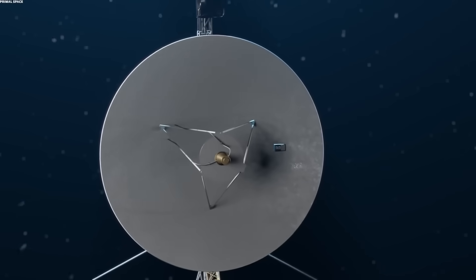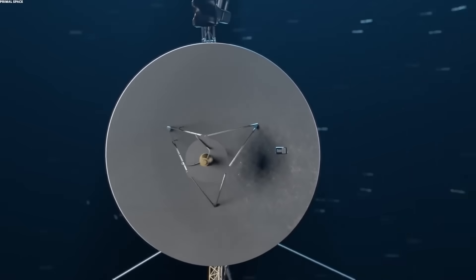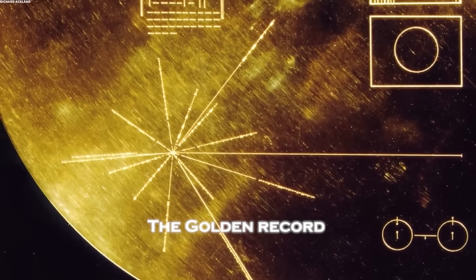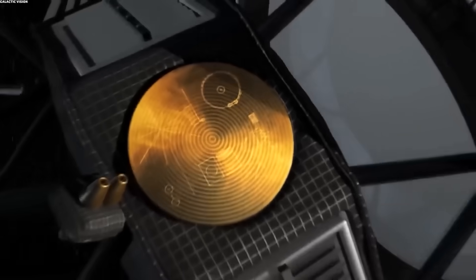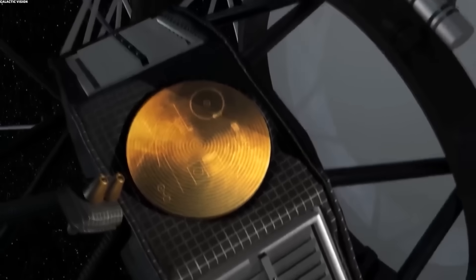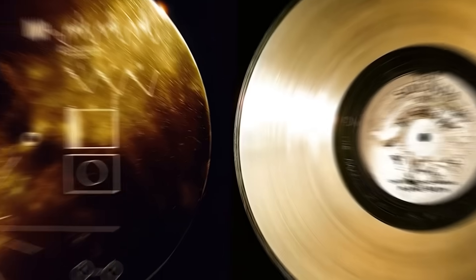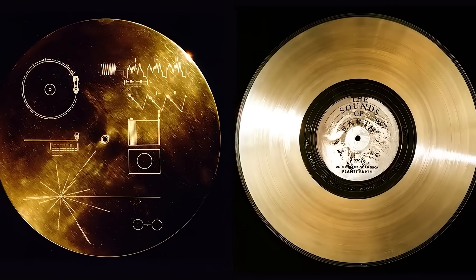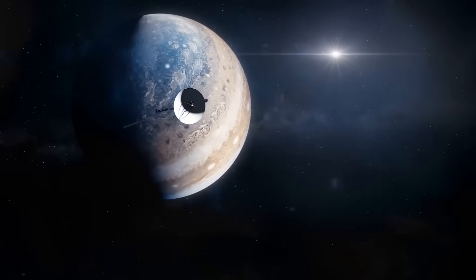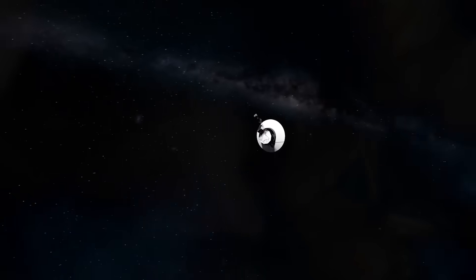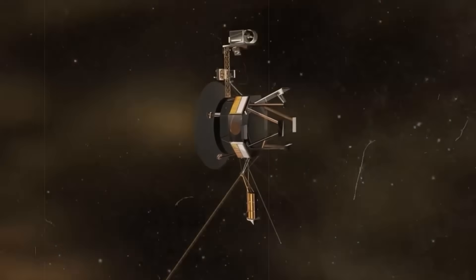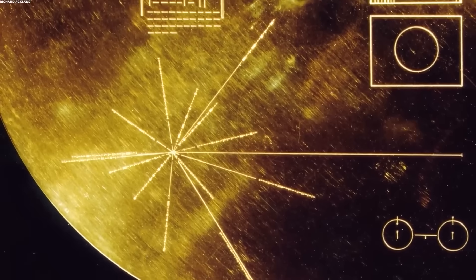When Voyager 1 was launched, Carl Sagan and a small team of scientists placed aboard it one of humanity's most iconic artifacts, the Golden Record, a copper disc coated in gold, containing greetings in 55 languages, music from multiple cultures, and scientific diagrams intended to introduce Earth and its inhabitants to any life form that might one day find it. Most thought of it as symbolic, a romantic gesture more than a real attempt at communication. But now, with Voyager showing signs of deviation and possible interaction, attention has turned back to that record.